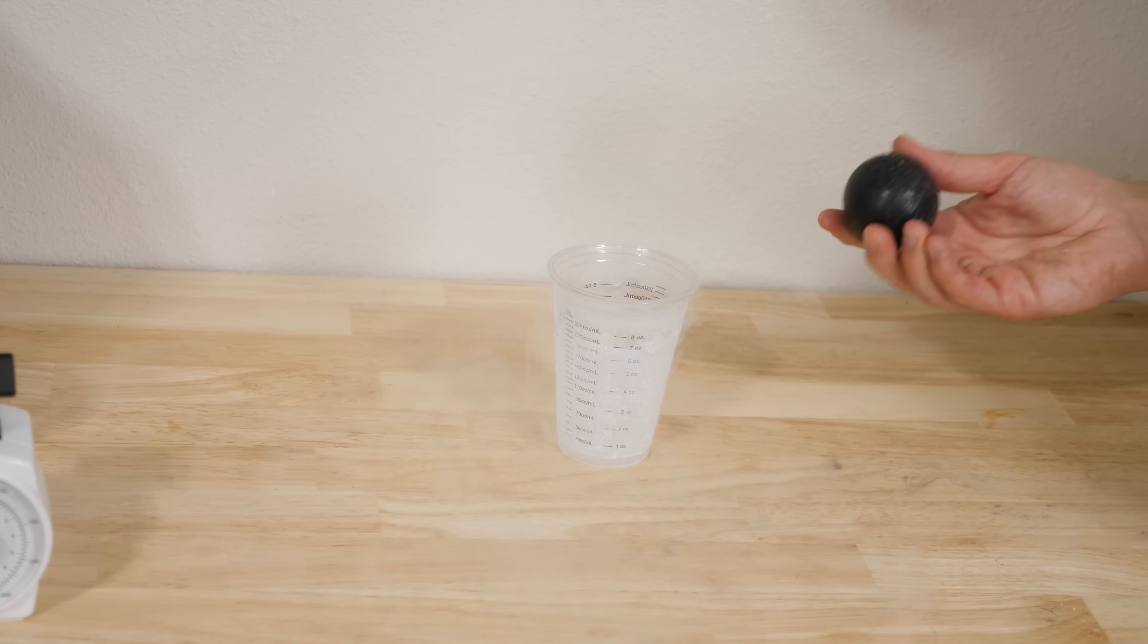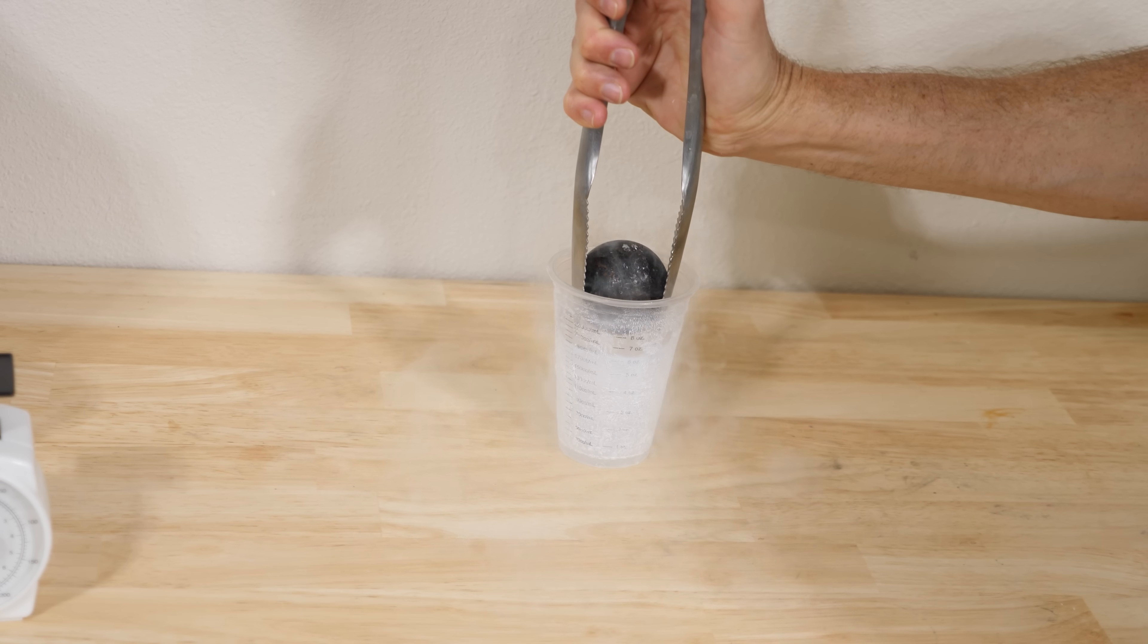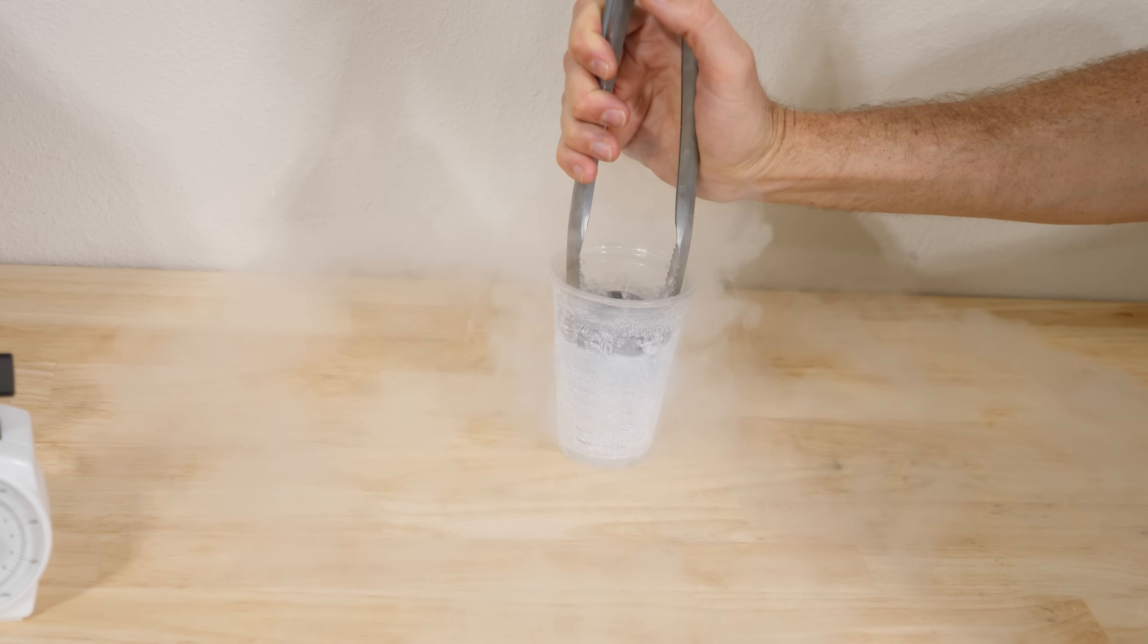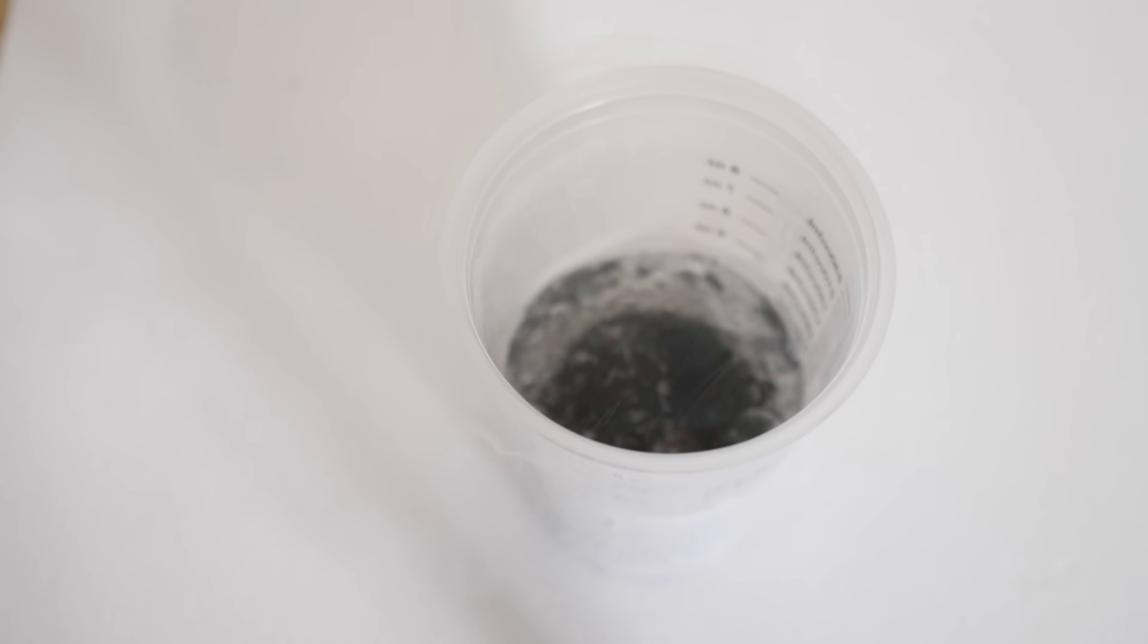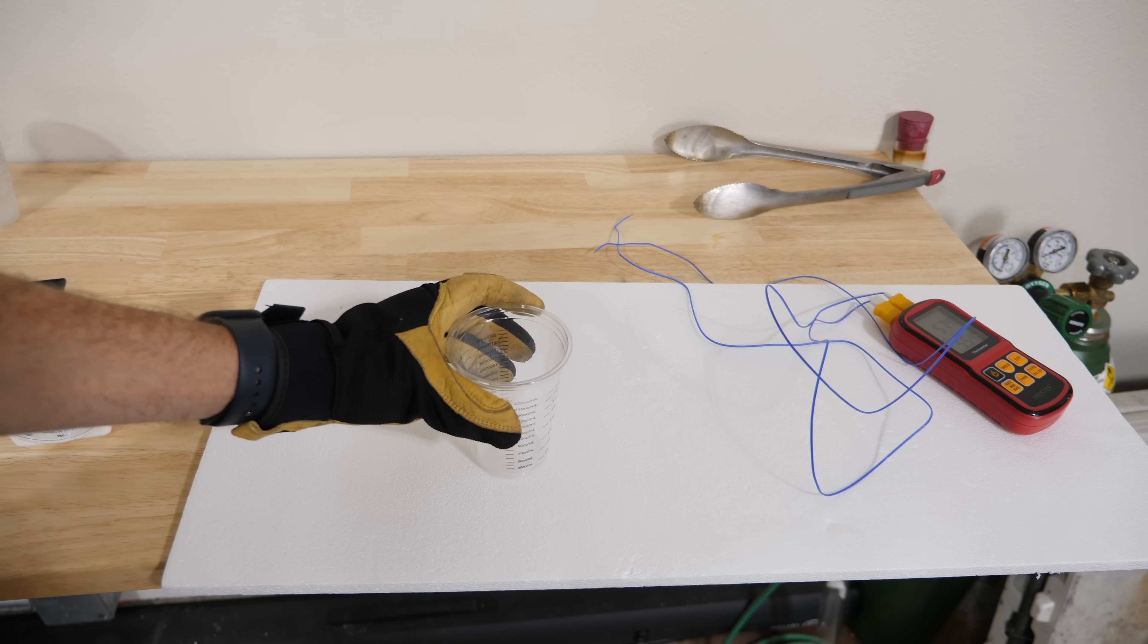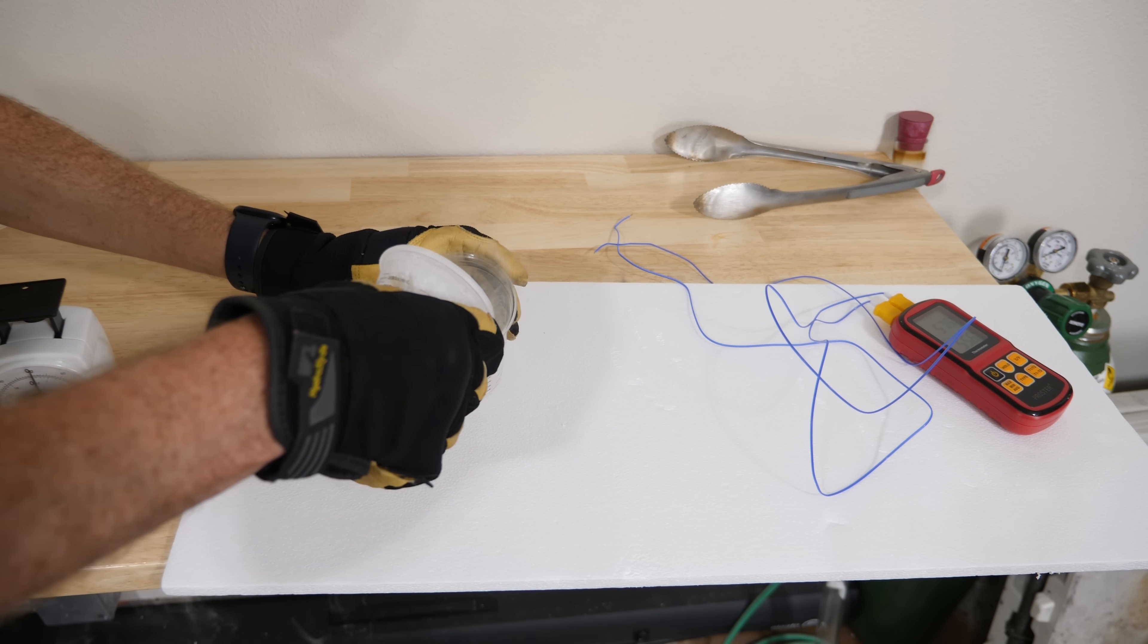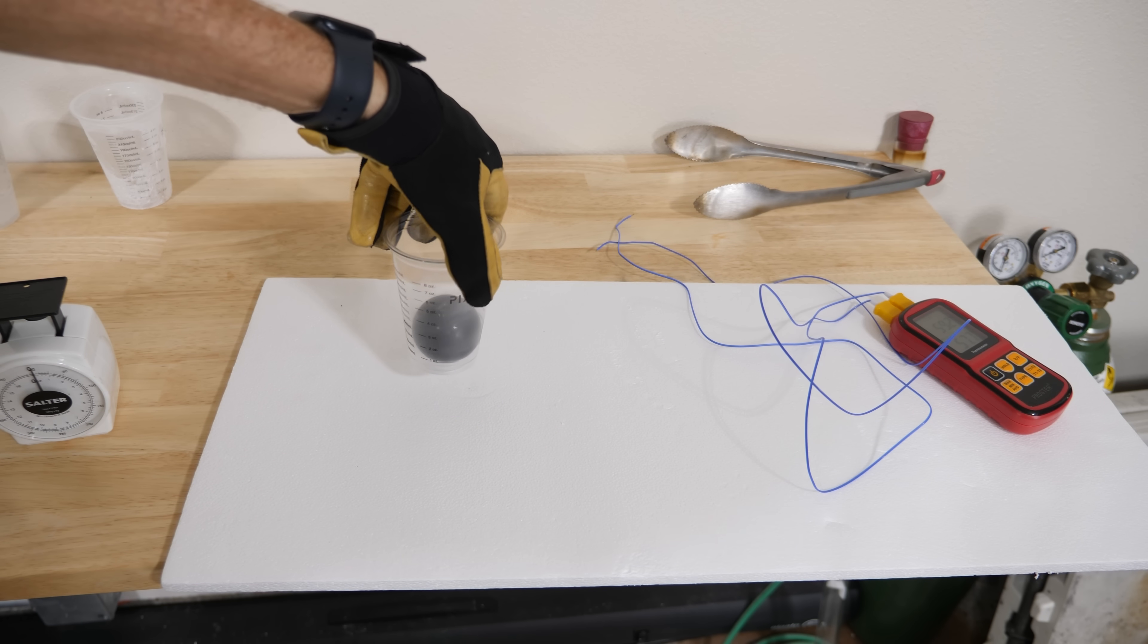So first we need to cool our mass of metal down. Now, I haven't used stainless steel, but I've used iron in this case. It has about the same heat capacity. So it's at liquid nitrogen temperatures now. This is negative 196 degrees Celsius. Okay, here's our negative 196 degree ball. There we go. Look at that.